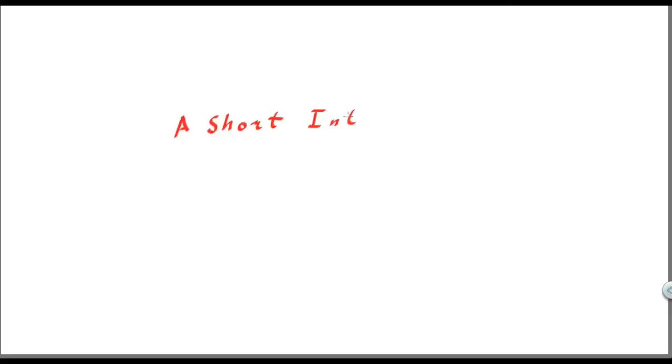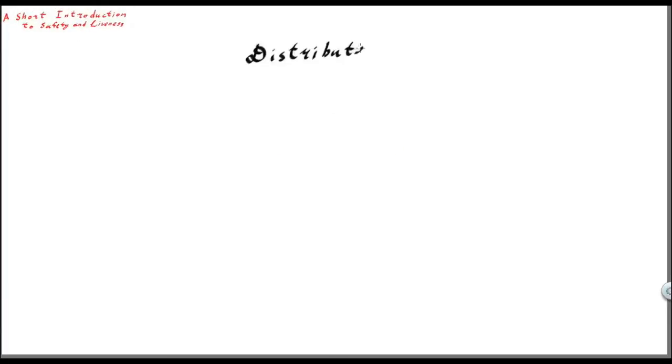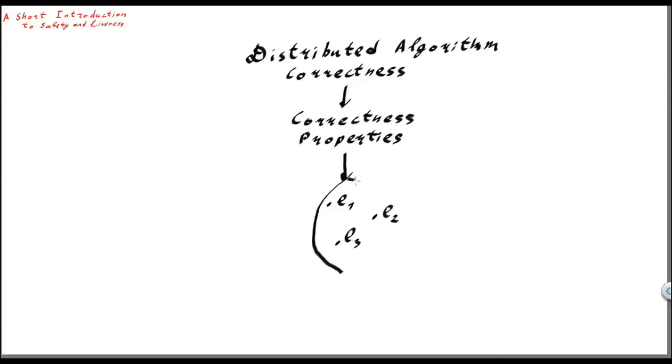In this video, I will present a short introduction to safety and liveness properties of distributed algorithms. Correctness of distributed algorithms is specified through correctness properties. Basically, these properties are sets of executions which are allowed.